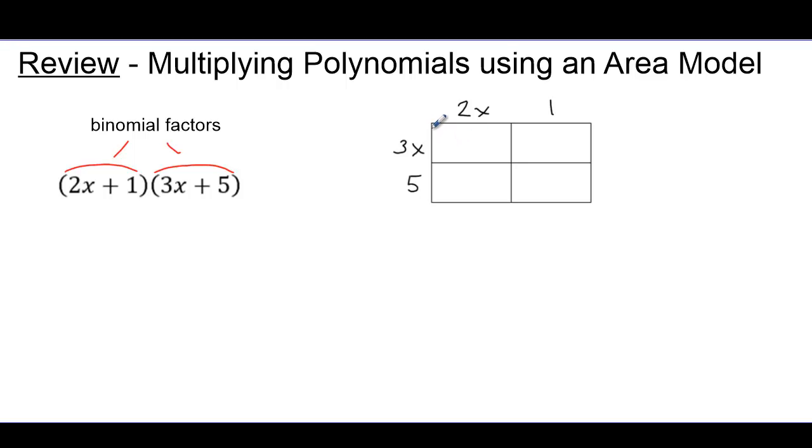2x times 3x gives me an area inside of 6x², 3x and 1 gives me 3x, the dimensions of 2x times 5 give me 10x, and the dimensions of 5 by 1 give me the area inside of 5.